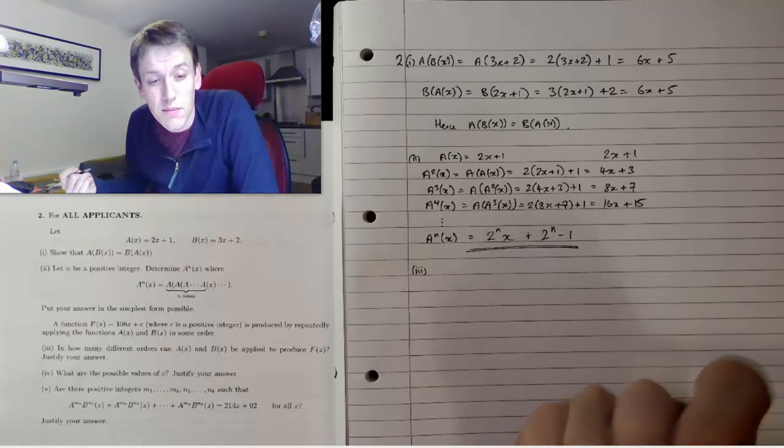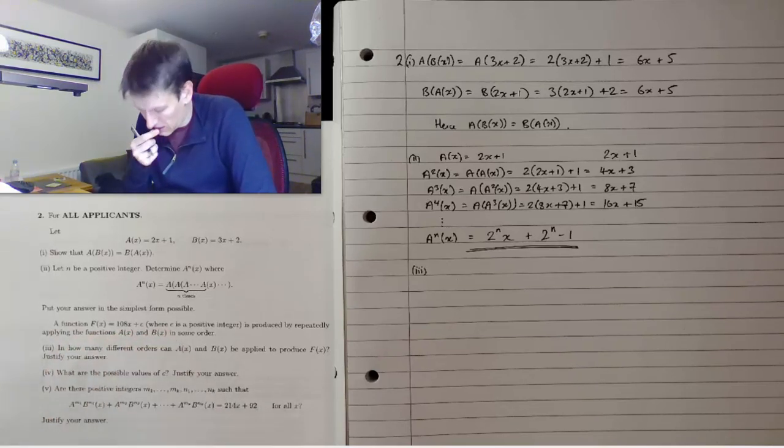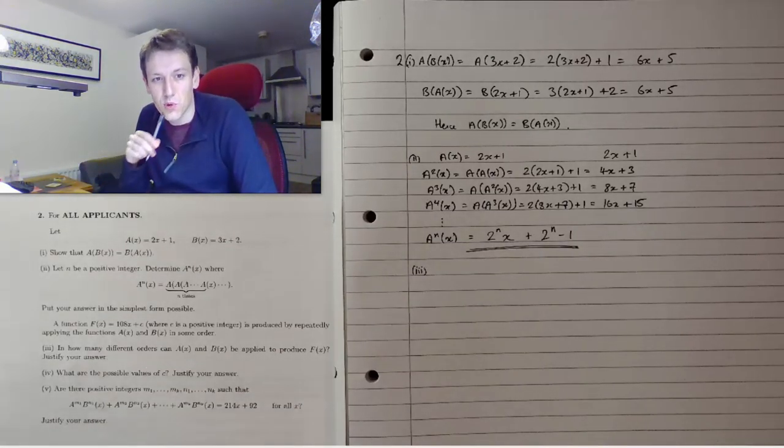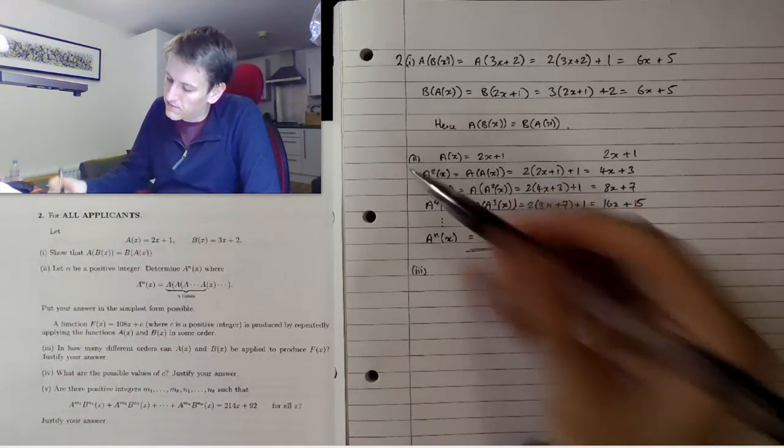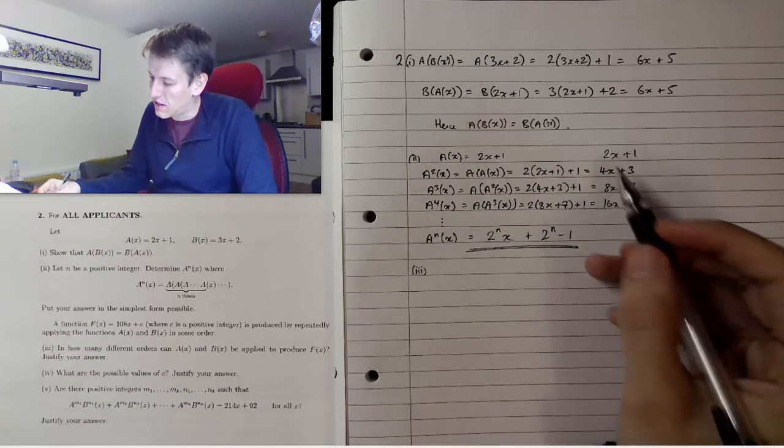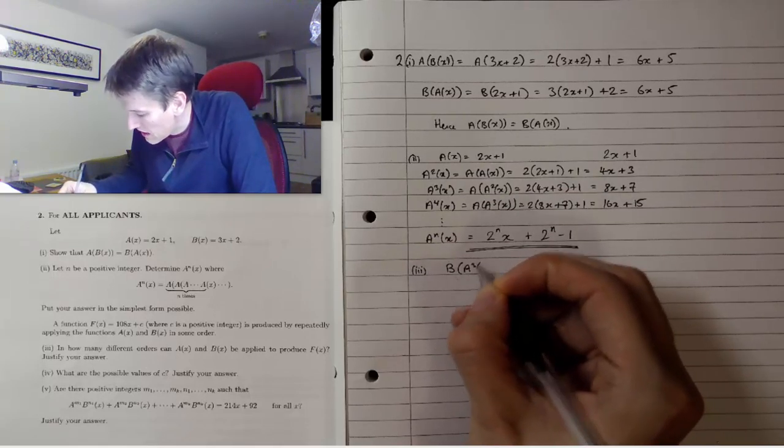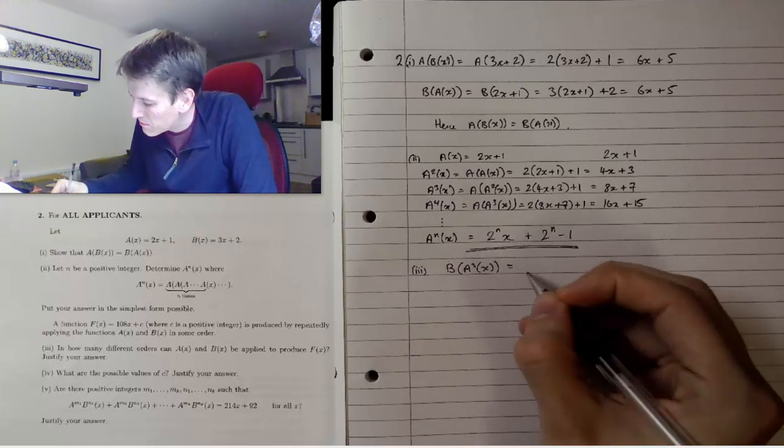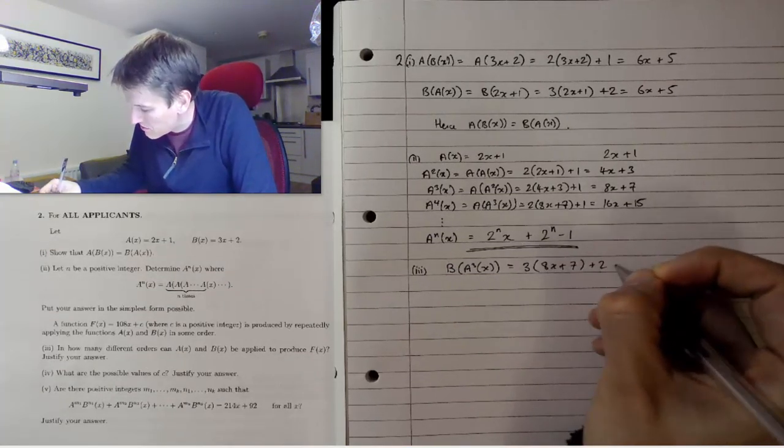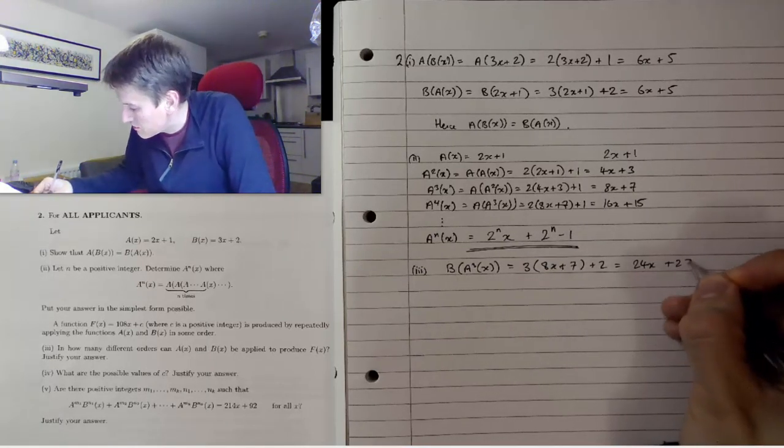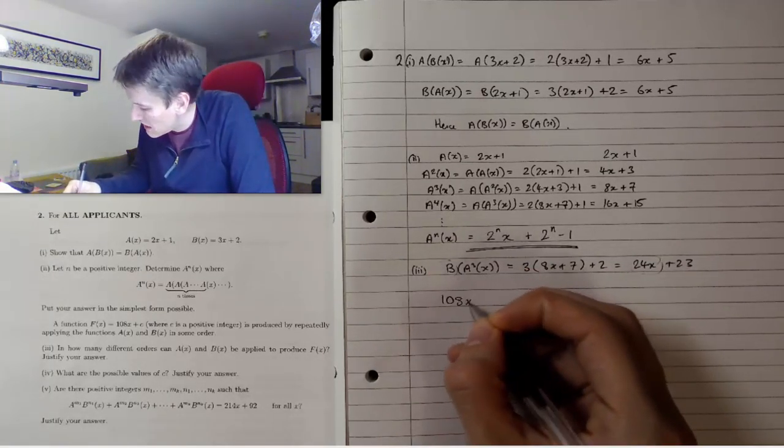That was 3 marks, so we've got 4 out of 15 marks. Part iii: A function f(x) = 108x+c is produced by repeatedly applying functions a and b in some order. Having looked at question 2, every time we apply a it multiplies the x term by 2. If I apply b, it multiplies the x term by 3. So if my target is 108x+c, I need to think about how I can get to 108 by doubling and tripling.